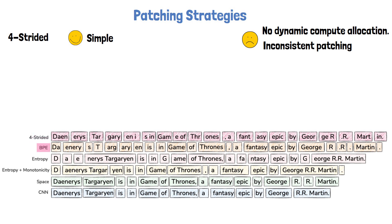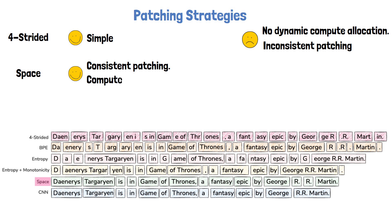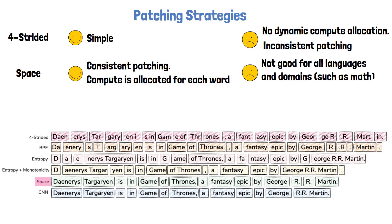BPE stands for Byte Pair Encoding, a sub-word tokenization method used in many large language models such as LLaMA3. There is also a simple method called Space Patching, where we start a new patch after any space-like byte. One advantage is consistent patching, since we patch the same word the same way in any sequence. Additionally, predicting the beginning of a word is usually more challenging than predicting the rest, so compute is allocated for every word. However, this method does not fit all languages and domains such as math, and it cannot vary patch size since it is determined by word length.